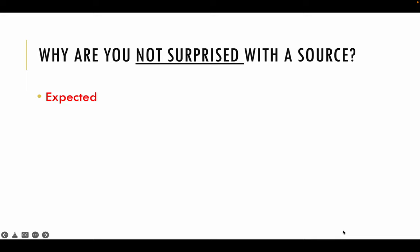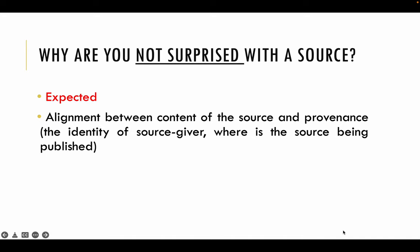So why are you not surprised with a source? We are not surprised because it is expected — there's an alignment between the content of the source and the provenance. The information in the provenance includes things like the identity of the source-giver and where the source is published. If the content correlates with what you expect the source-giver to say, then we'll say we're not surprised. Or, we are not surprised because we see it corroborating with other sources — if source A and another source both state the same thing, hence I am not surprised.